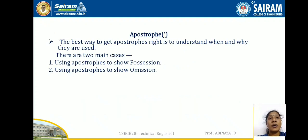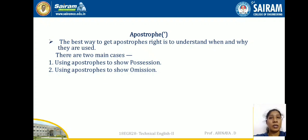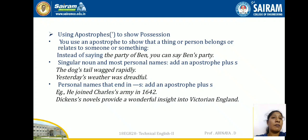Those are the usages of the comma. Next, the apostrophe. The best way to get apostrophes right is to understand when and why they are used. There are two main uses: first, to show possession, and second, to show omission.